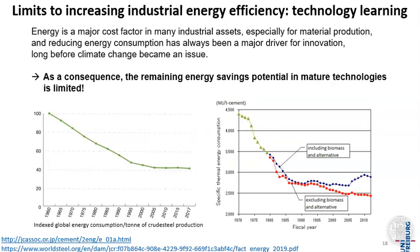As an example of the technology learning limit: since energy is a major cost factor in almost all material production, material producers have always strived to reduce energy consumption — not for sustainability or climate concerns, but simply for cost reasons. The steel industry has become ever more energy efficient over the last 180 years or so, and as a consequence most of the energy savings potential in that industry has already been seized. Empirical data for both steel and cement demonstrate that the efficiency potential was there, but by now most of it has already been realized.